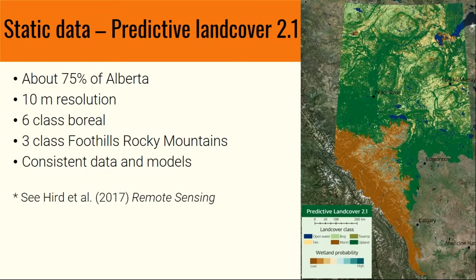Our first product is the Predictive Land Cover Layer 2.1, which will be updated to 2.2 and 3.0. It currently covers about 75% of Alberta at 10-meter resolution. In the boreal we have six land cover classes: four wetland classes — bog, fen, swamp, marsh — plus open water and upland. In the foothills and Rocky Mountains we have three classes: open water, upland, and wetland in probabilistic form, showing probability of wetland.